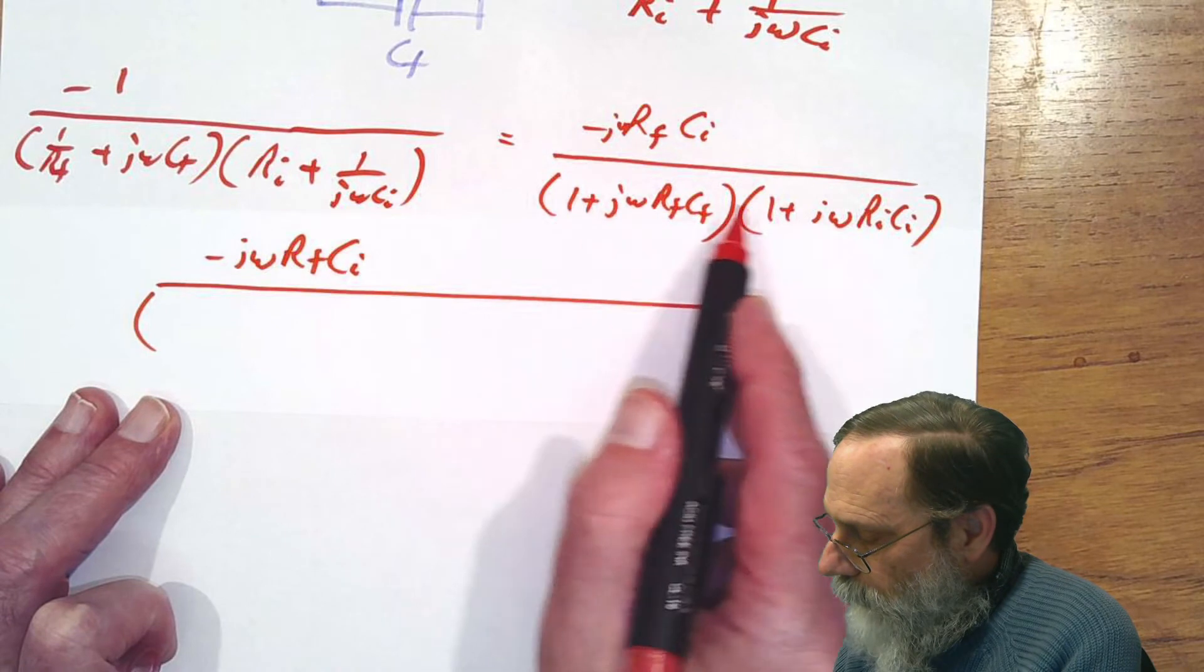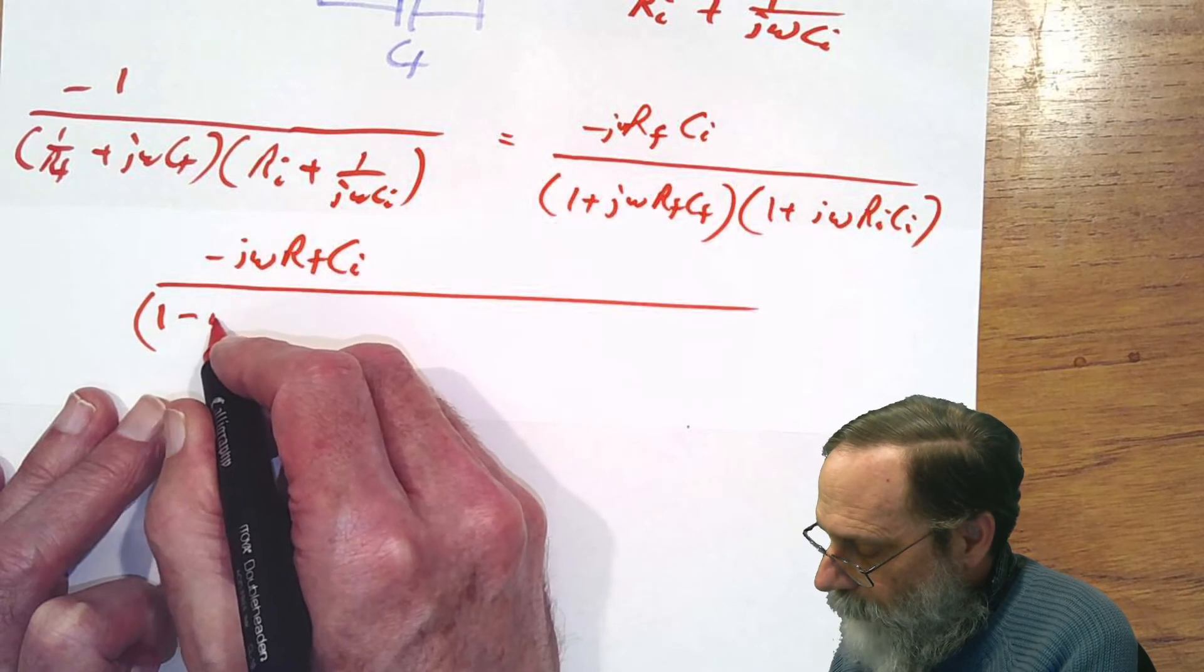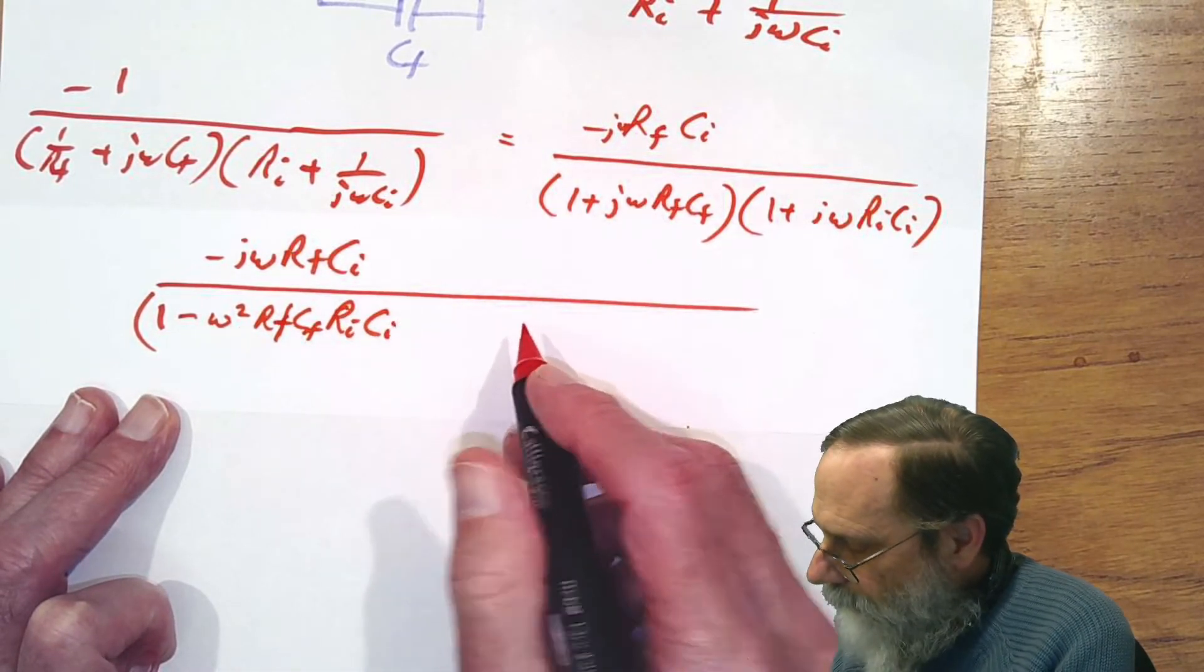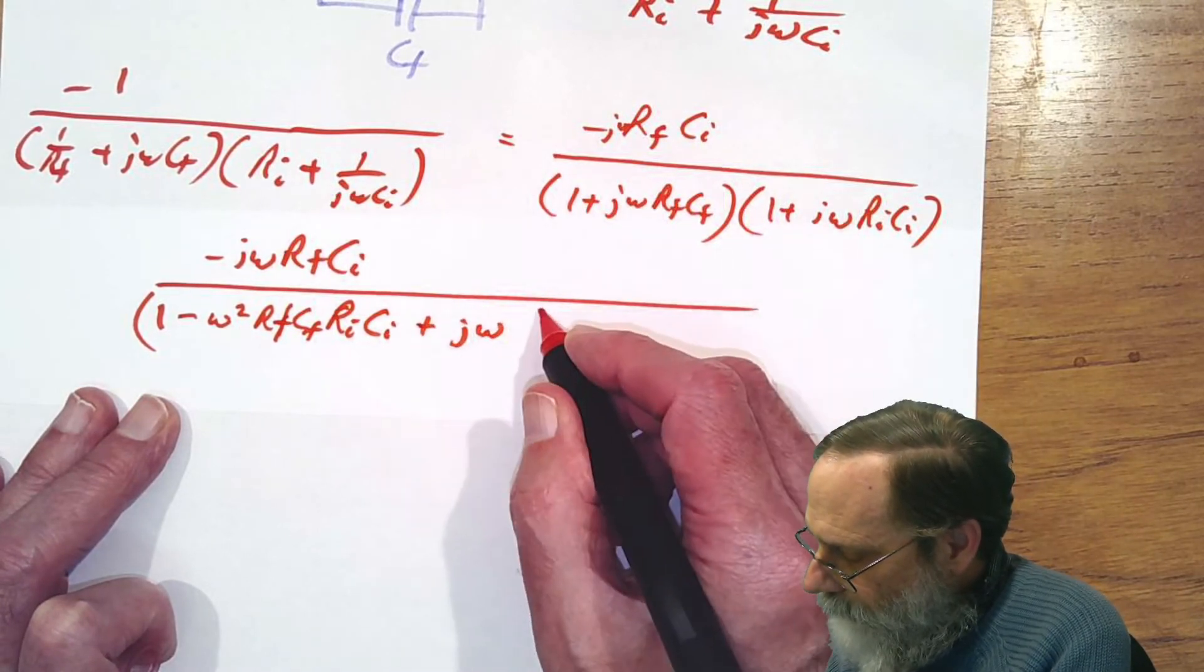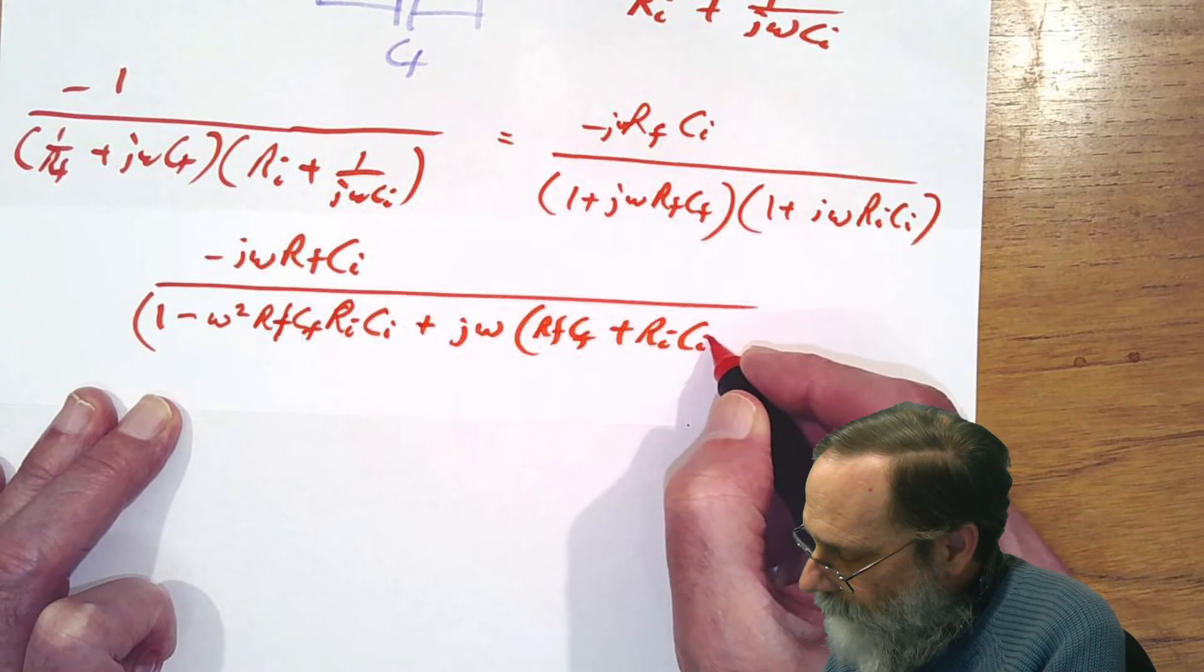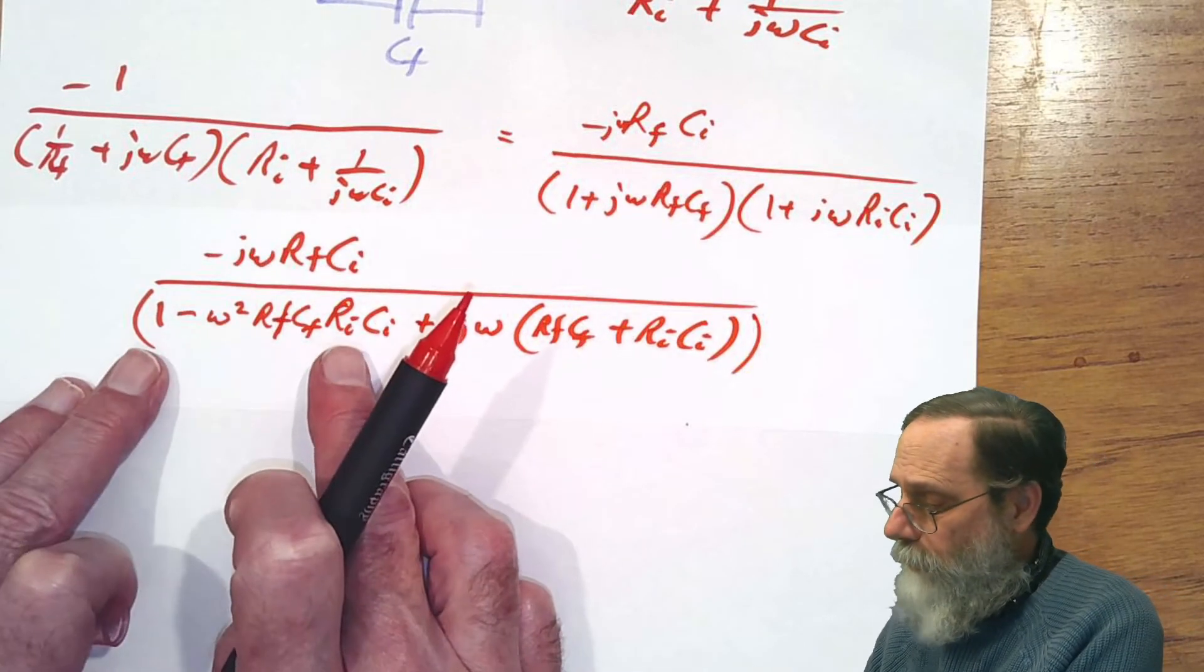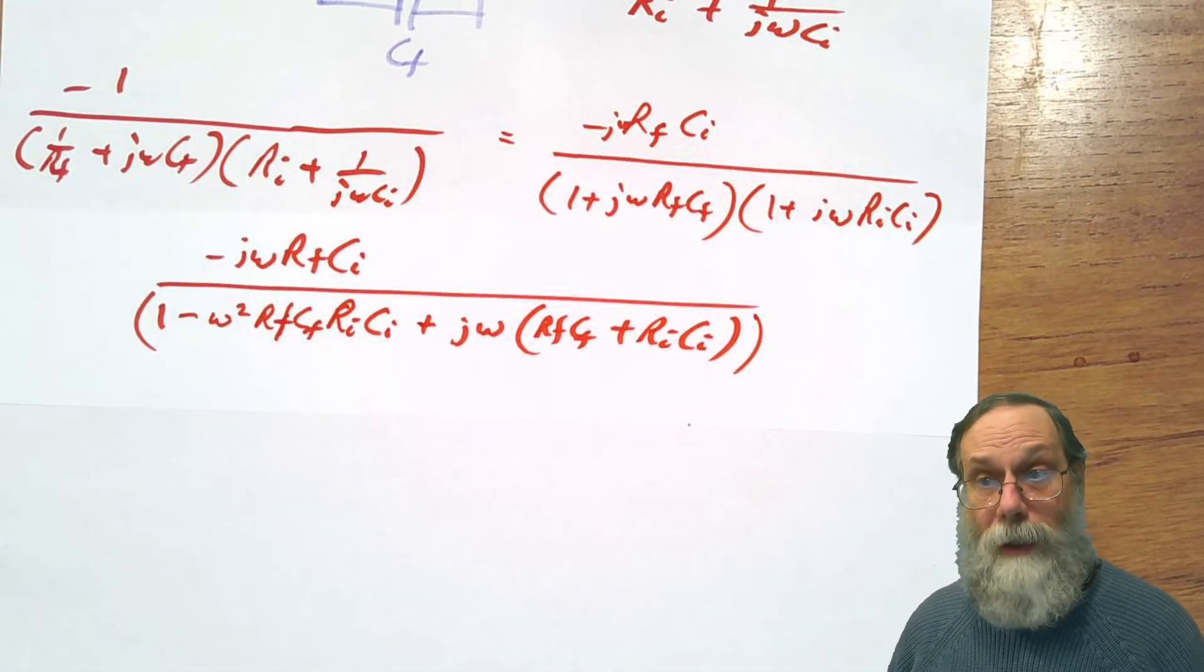On top, we have minus j omega Rf over Ci, or Rf Ci, and on the bottom, we'll have the real parts - one, and then the two imaginary parts multiplied together will give you minus omega squared Rf Cf Ri Ci, and then the two imaginary parts separately, plus j omega, and then we'll have Rf Cf plus Ri Ci. That doesn't look simpler, but we've got the real part and the imaginary part separate now.